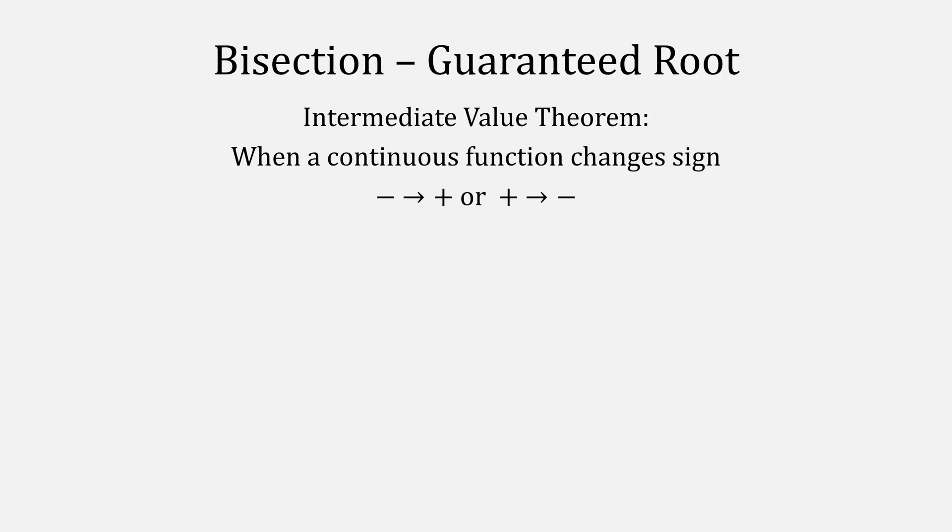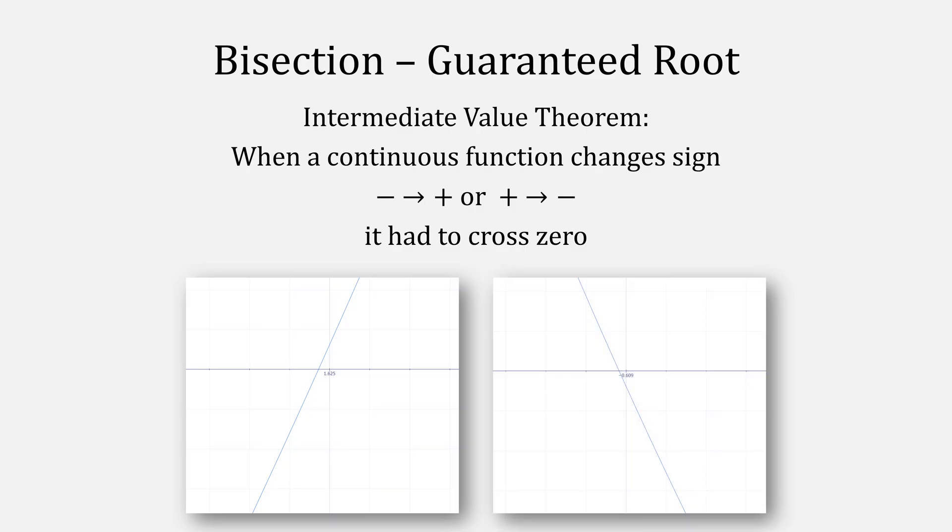One that is, though, is bisection, using the intermediate value theorem. When a continuous function changes sign, such as going from negative to positive or positive to negative, that means it has to cross the zero mark, like our earlier example.